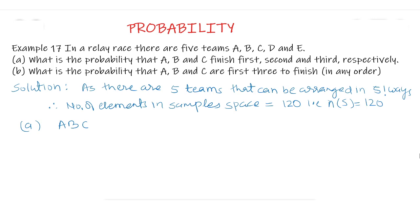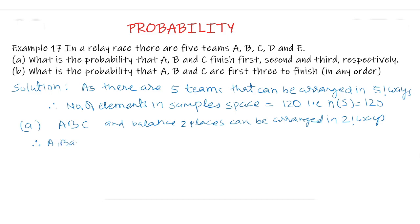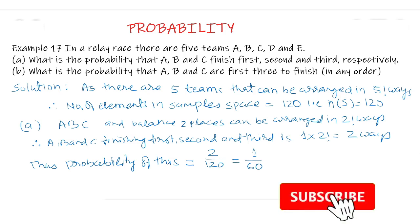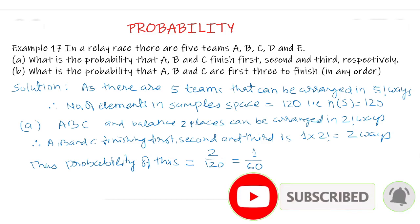So A, B, C is 1 arrangement and the remaining 2 places can be arranged in 2! ways. Therefore, A, B and C finishing 1st, 2nd and 3rd is 1 multiplied by 2! equal to 2 ways. Thus, the probability is equal to 2 upon 120 which is equal to 1 upon 60. So, the probability of A, B and C finishing 1st, 2nd and 3rd respectively is 1/60.